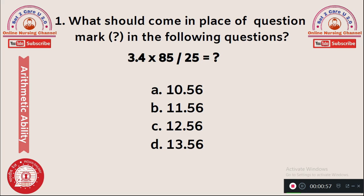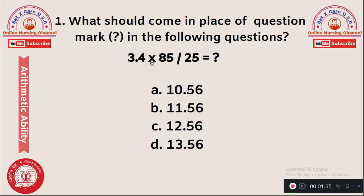What should come in place of the question mark in the following question? 3.4 × 85 ÷ 25 = ? When such a question comes, you must think about BODMAS rule. BODMAS tells us that first we simplify numbers inside brackets, but here we don't have any brackets. So following DMAS, division has to be solved first, followed by multiplication, then addition and subtraction.